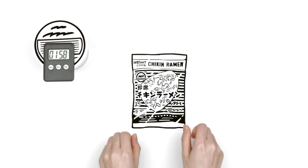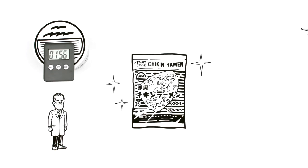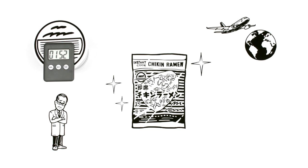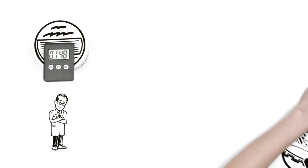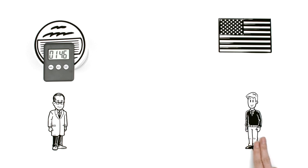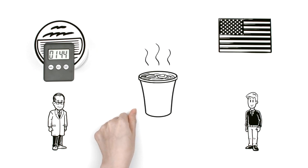Instant ramen was a huge hit. Momofuku wanted to expand overseas, but there was a problem. People in many countries weren't used to eating from bowls with chopsticks. On a trip to America, he saw people putting his noodles in paper cups and eating them with forks. This gave him an idea.